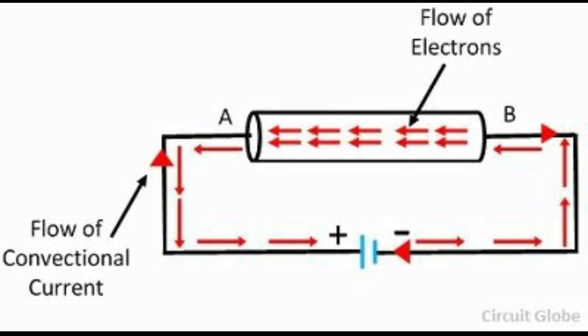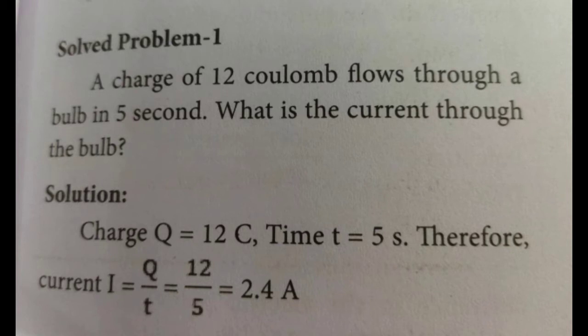Now we move on into the definition of electric current. Electric current is often termed as current and is represented by the symbol I. It is defined as the rate of flow of charges in a conductor. This means that the electric current represents the amount of charges flowing in any cross-section of a conductor, say a metal wire, in unit time. If a net charge Q passes through any cross-section of a conductor in time T, then the current flowing through the conductor is I = Q/T, where I is the current, Q is the charge, and T is the time taken.